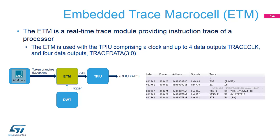Two types of trace information are handled by the ITM: the hardware trace, which has been described in the DWT module, and the software trace, which enables software to send data that will be displayed in the debugger window. The data written by software in one of the 32 ITM 32-bit ports is transported in the payload of a trace packet to the host debugger. The printf function can be redirected to the ITM ports to facilitate code instrumentation.